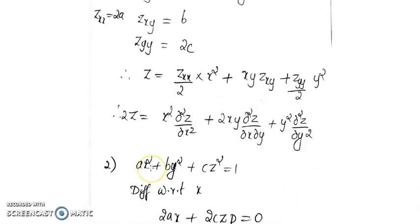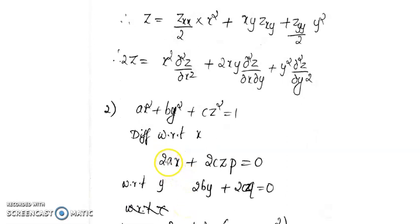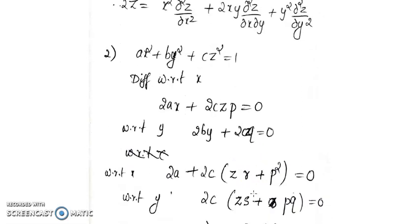The next equation is ax² + dy² + cz² = 1, where a, b, c are arbitrary constants. Differentiating partially with respect to x gives 2ax + 2cz·p = 0. Differentiating with respect to y gives 2dy + 2cz·q = 0. Again differentiating the first equation with respect to x gives 2a + 2c(zr + p²) = 0.